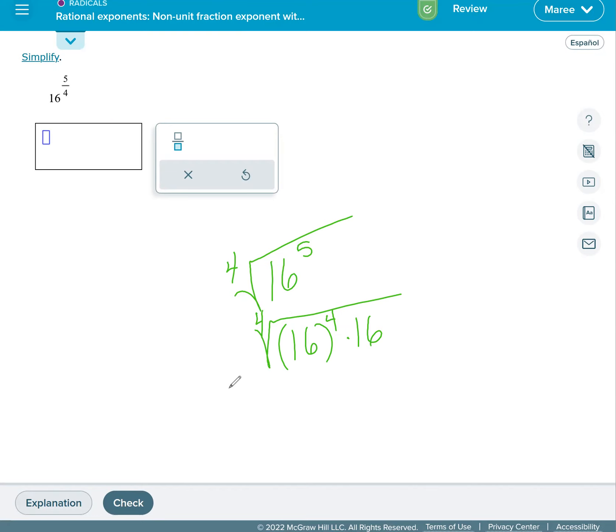So the fourth root of 16 to the fourth power is just 16. The fourth root of 16, we just showed that 16 is 2 times 2 times 2 times 2, that's a group of 4. When the index is 4, we look for groups of 4 and then one of those can come outside. So we have 16 times 2.